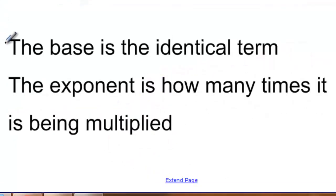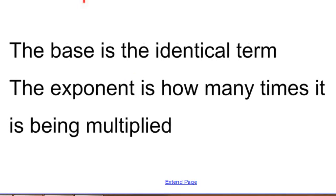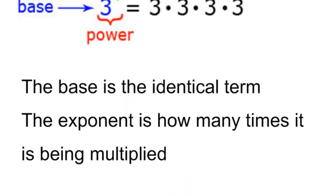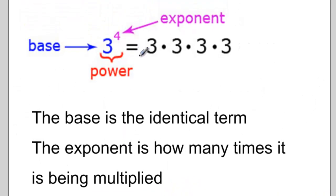Another way to say this is the base is the identical term — it's the term that will be multiplied by itself many times. And the exponent is how many times it is being multiplied. So 3 to the exponent 4 can be written as 3 times 3 times 3 times 3. That little dot is a type of mathematical shorthand for multiply.